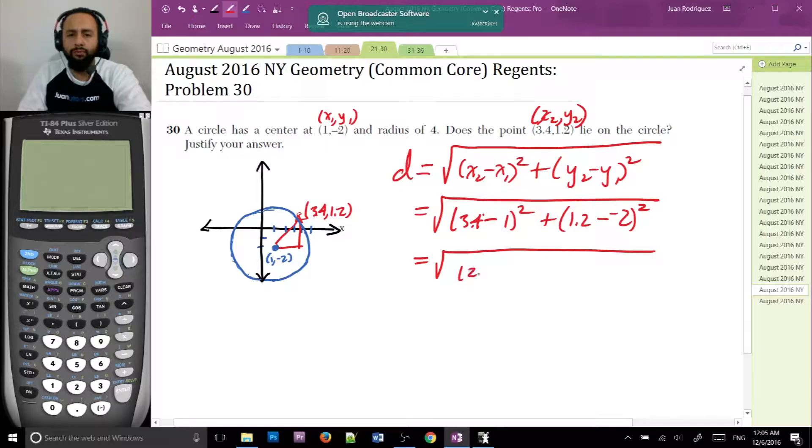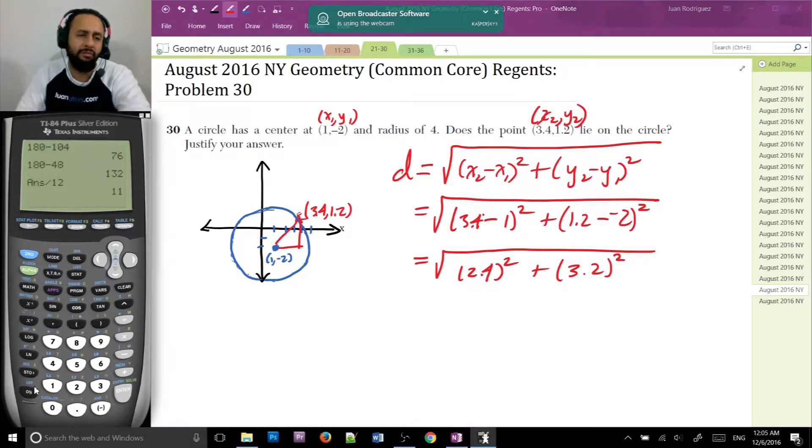So square root, 3.4 minus 1 is 2.4 squared plus 1.2 minus -2 is 3.2. If you completely forget how to subtract negative numbers, use the calculator. So 1.2 minus a -2 is 3.2, right?